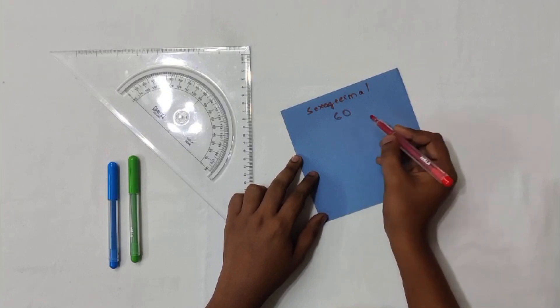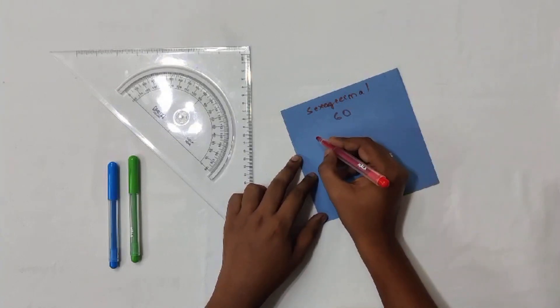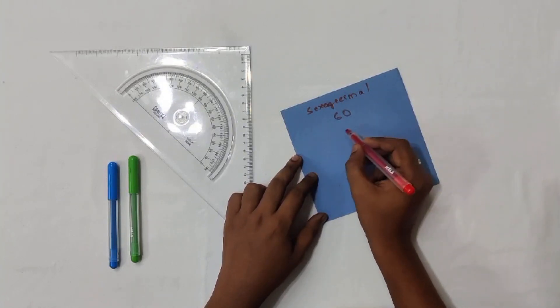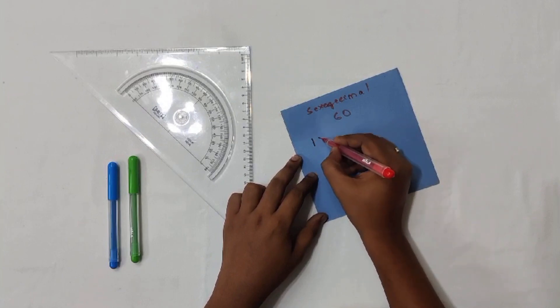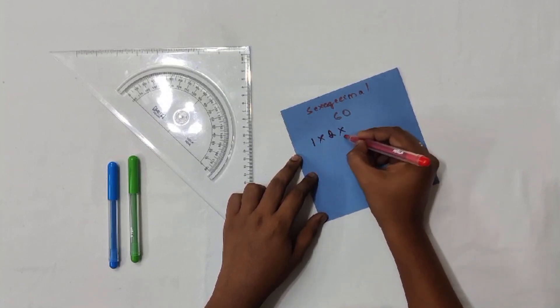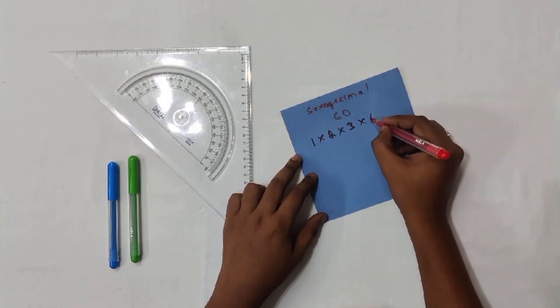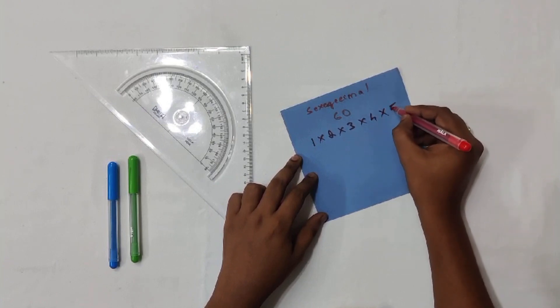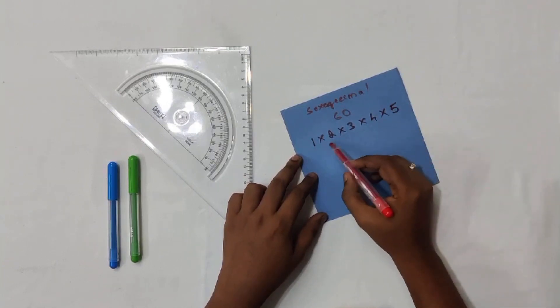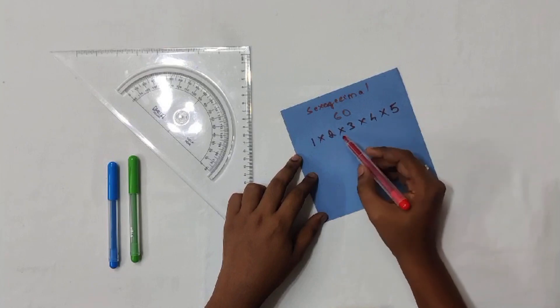Considering the base numbers as 1, 2, 3, 4, 5, we need to make sure that we have a number which will be easily divisible by all these five numbers that we use for counting. Here you can see that we have 1, 2, 3, 4, 5, and 2 and 4 have common factors.